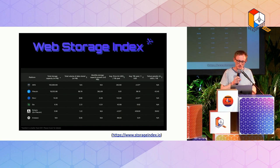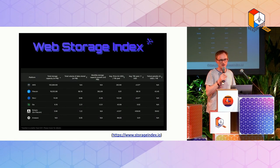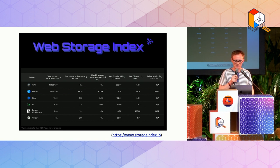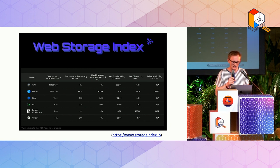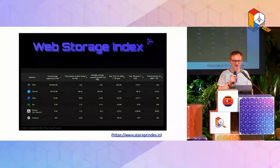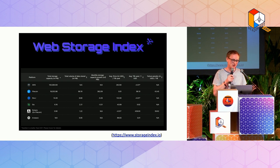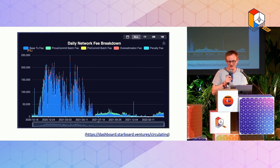Filecoin is somewhat larger than other web3 storage projects and significantly more cost-effective. Comparing it to AWS, it's around 12 times smaller in total storage capacity but catching up quickly and massively cheaper. More fundamentally, Filecoin is a different model: AWS is based on information asymmetry — you can put your data in but can't easily get it out — whereas with Filecoin everything is in the code, open and transparent.